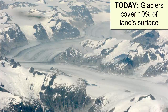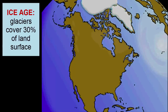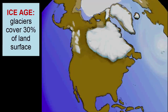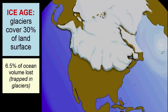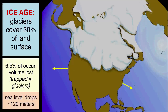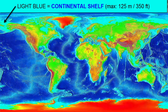Now let's look more closely at the glaciers. Today, glaciers, or land ice, cover 10% of the Earth's land surface. Periodically, during Earth's past history, these glaciers have grown up to three times larger to cover, at their greatest extent, 30% of the planet's land surface during periods we call ice ages. 6.5% of ocean volume is lost during those times and trapped on land as glaciers. This loss of water contributes to about 120 meters of sea level drop — that depth was the deepest part of the light blue-colored continental margins or continental shelves mentioned earlier.